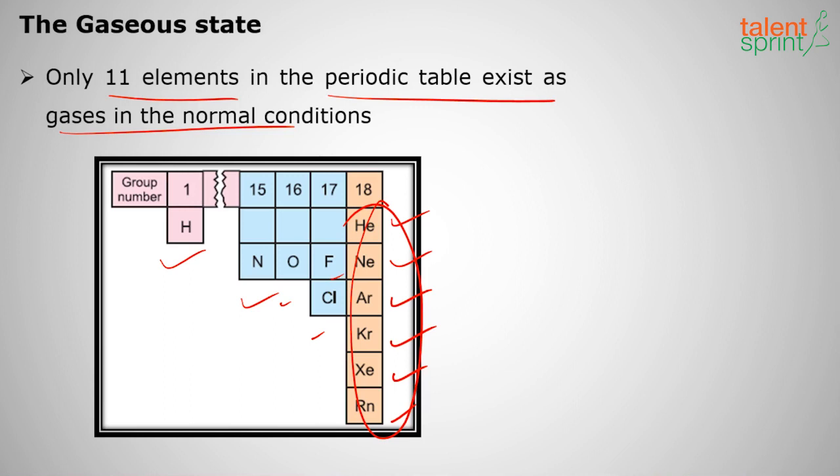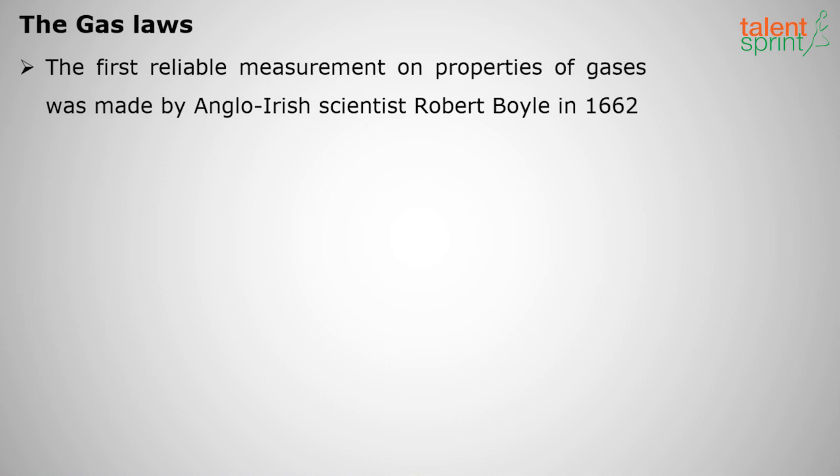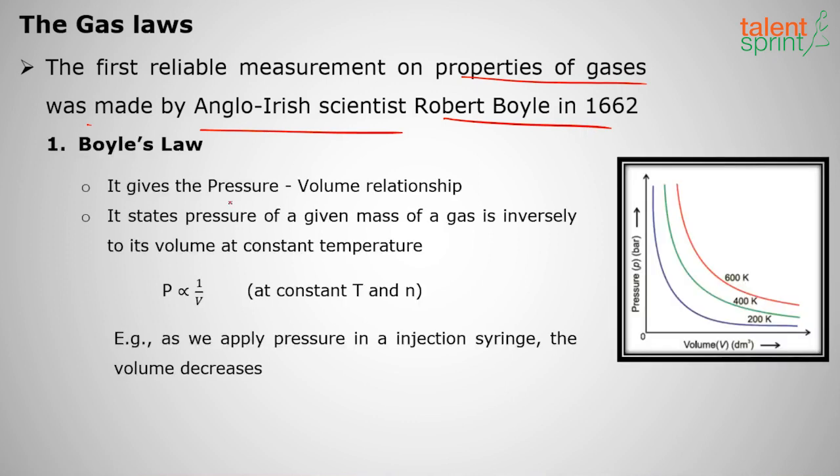What are gas laws? The first reliable measurement on properties of gases was made by Anglo-Irish scientist Robert Boyle in 1662. He gave the famous Boyle's Law. He gave the relationship between pressure and volume. He says pressure is always inversely proportional to volume, or volume is always inversely proportional to pressure at constant temperature and number of moles.